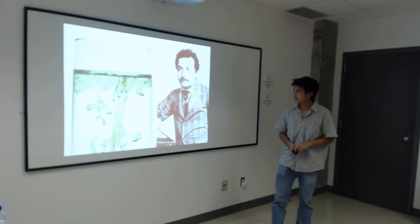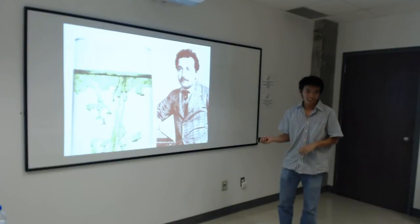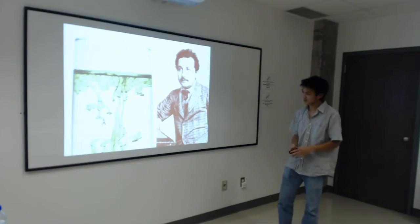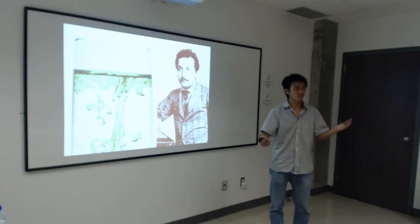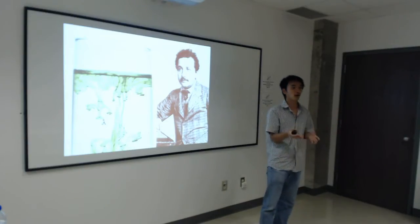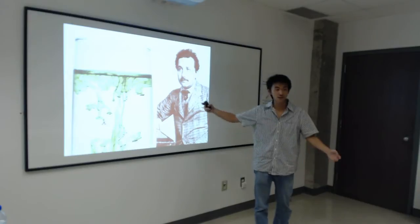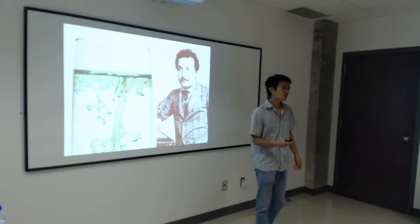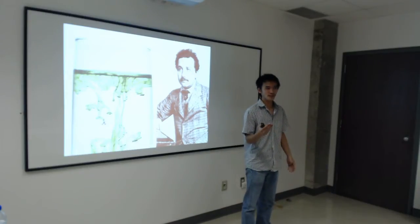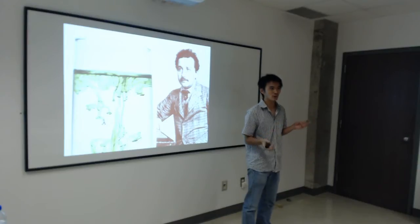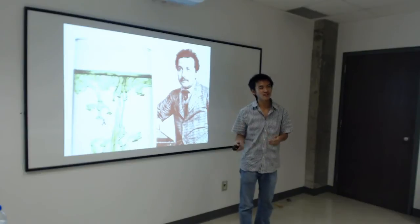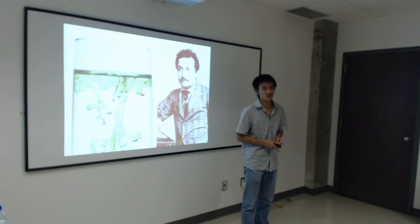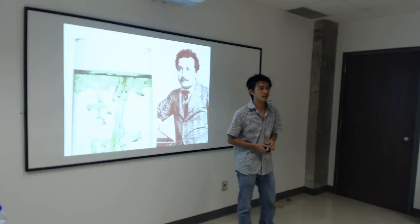Albert Einstein. I guess you know Albert Einstein — he did a lot of things. He invented special relativity, he invented general relativity, he was one of the main founders of quantum mechanics, basically the whole of physics. But weirdly enough, he didn't get the Nobel Prize in physics for any of these works. He got the Nobel Prize for something else, which is probably just as important as the other things he did.